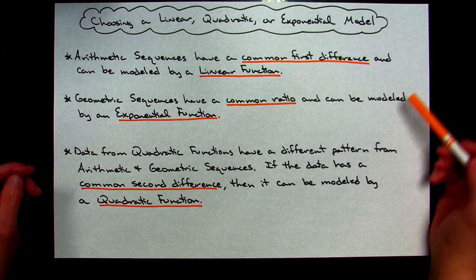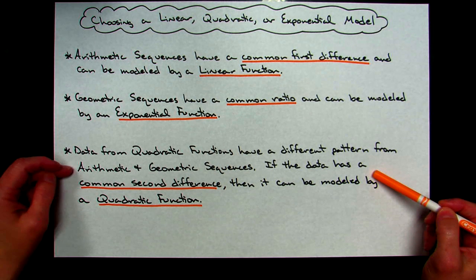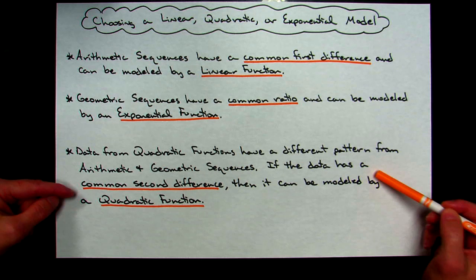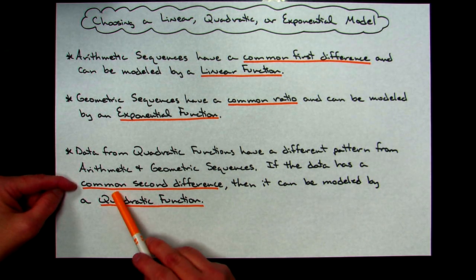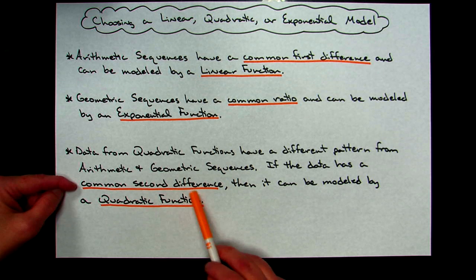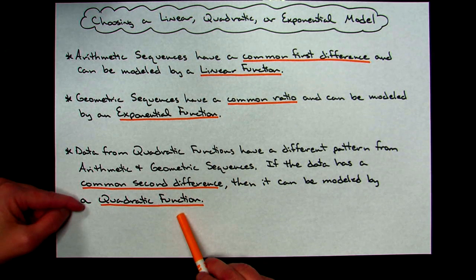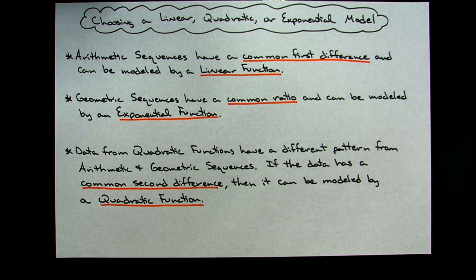Your quadratics, on the other hand, really do not follow the arithmetic or geometric sequence pattern at all. To determine if a set of data is quadratic, you will have to look at the common second difference. If it has a common second difference, then you know you've got a quadratic function. That's a summary of things to look for when you're looking at your x-y tables.